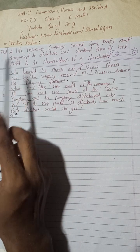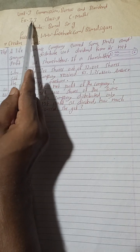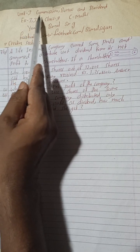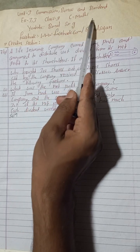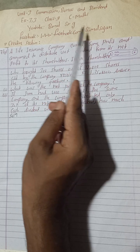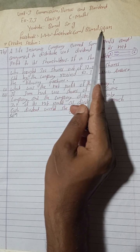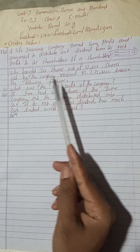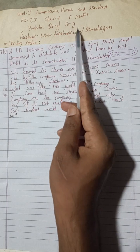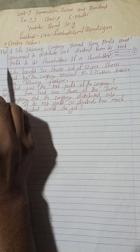Hi everybody, welcome back to Vimal Sarji YouTube channel. This is question number 7B of creative section exercise 3.3, unit 3: Commission, Bonus and Dividend, class 9 compulsory maths. You can follow me on this channel and subscribe so you won't miss any videos. Class 9 and 10 students will get all the solutions for your SCE examination. Now let's begin the solution of 7B.